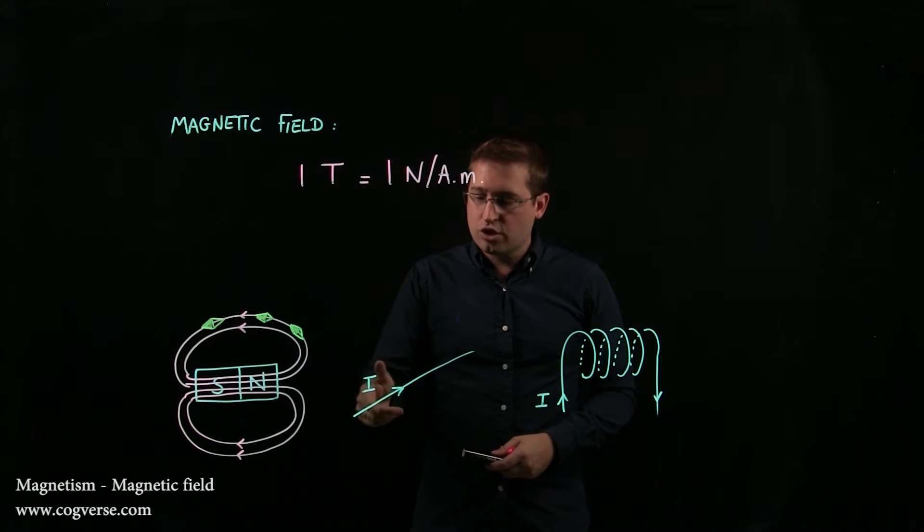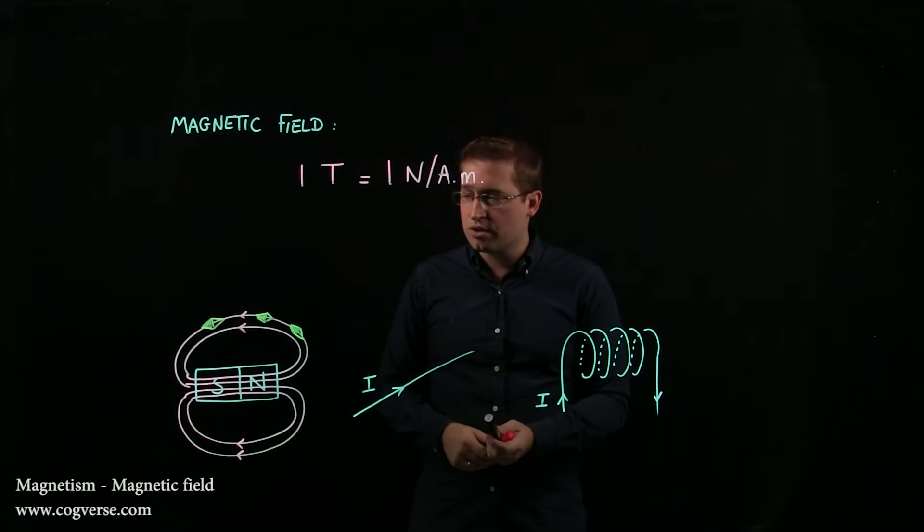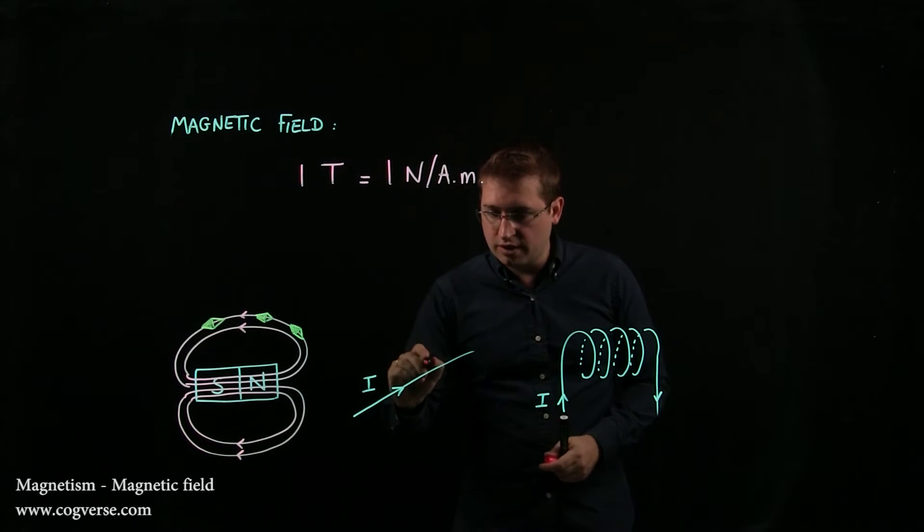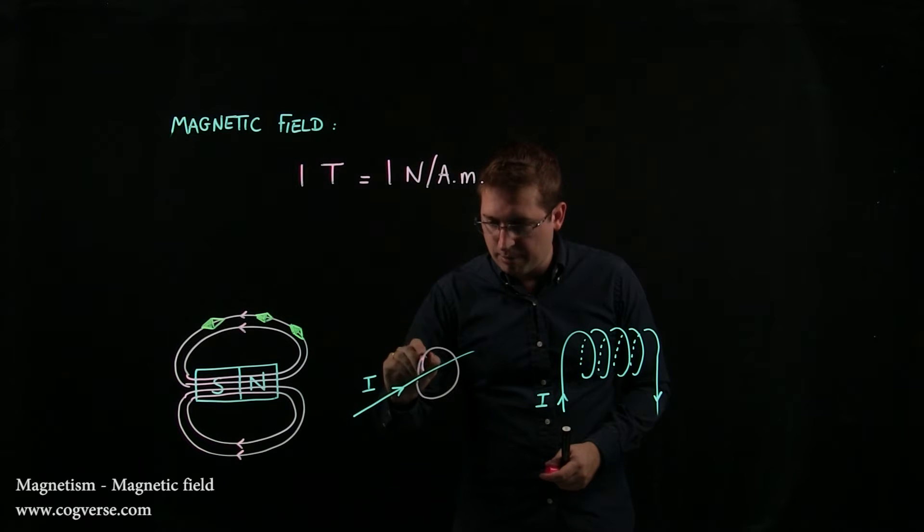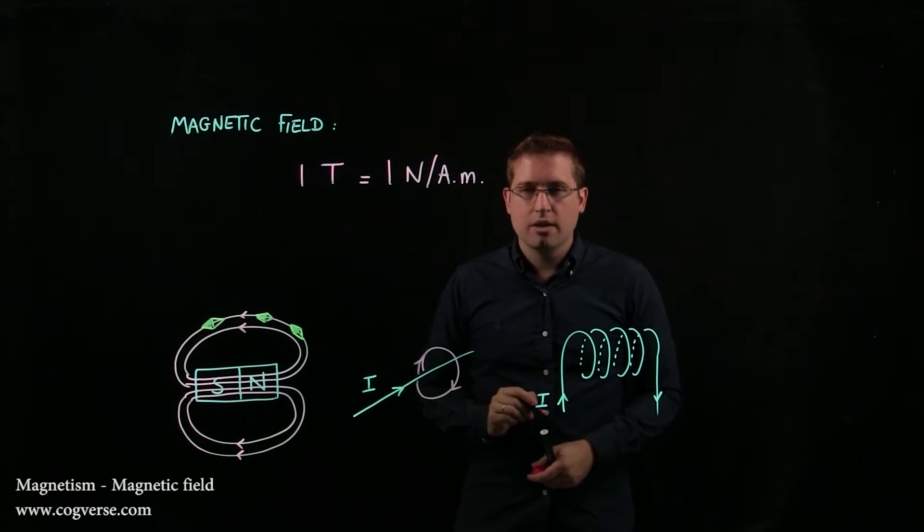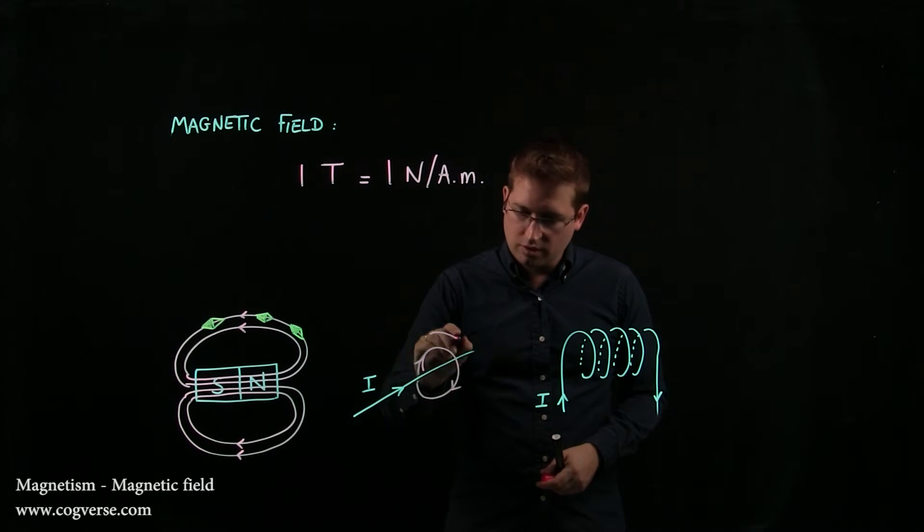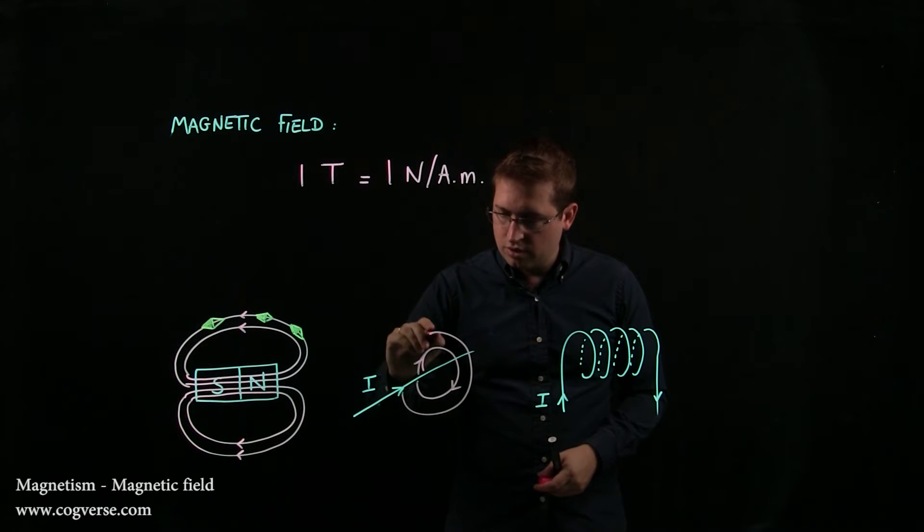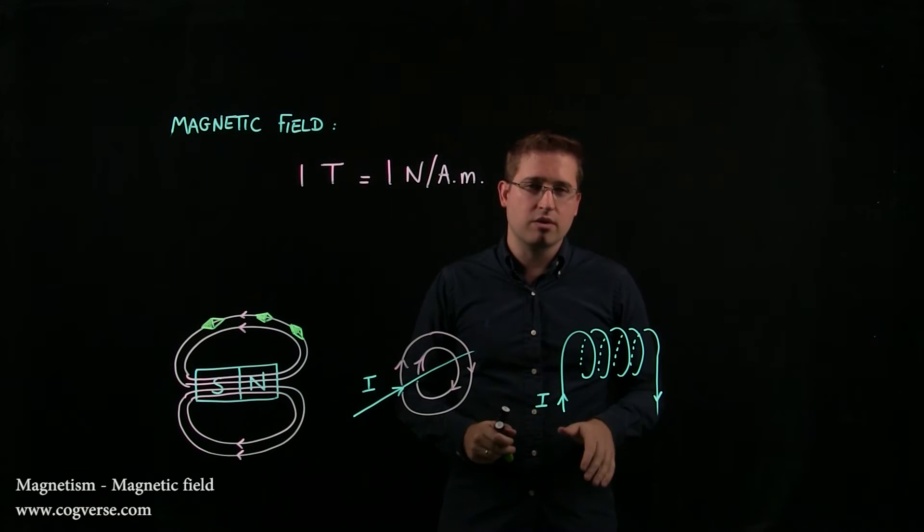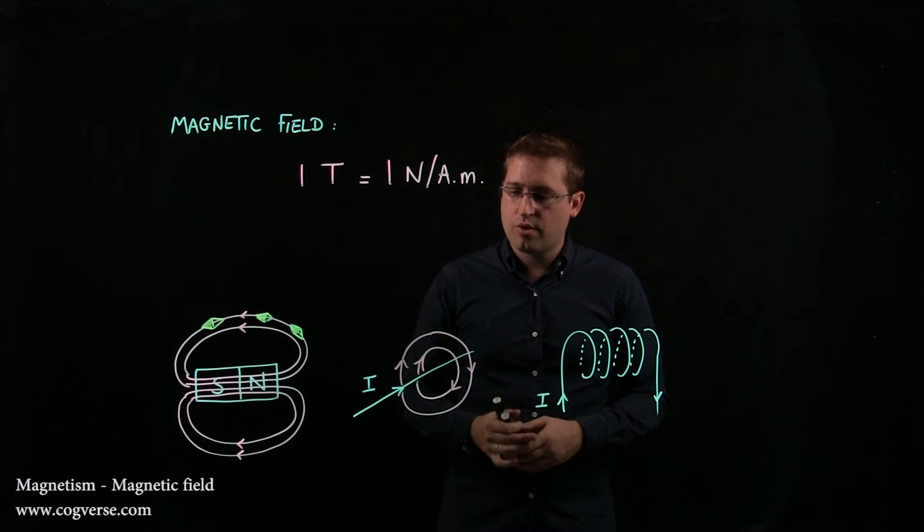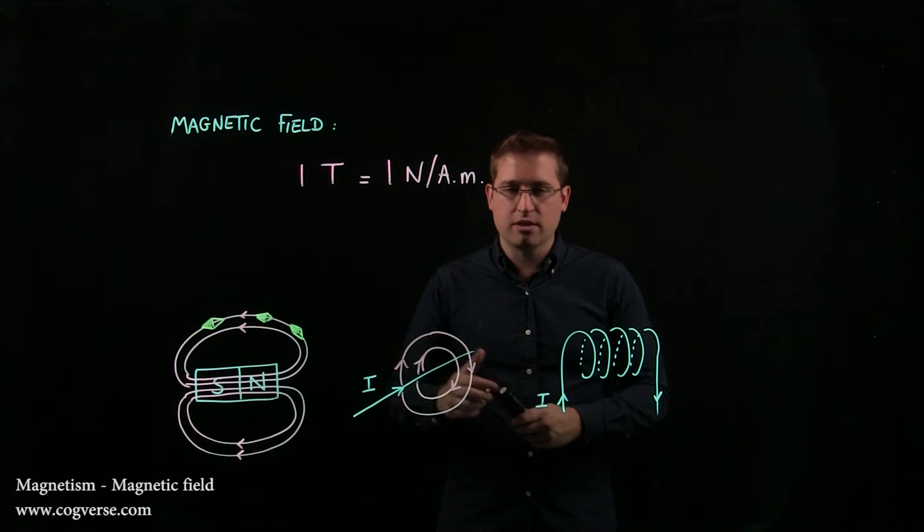We'll see that moving charge, such as a current, also creates a magnetic field. And the magnetic field actually wraps around this current and has circular closed field lines. Now the direction we'll define later on. We'll see that there's a way to figure out the direction of the current or the field lines if you know the other.